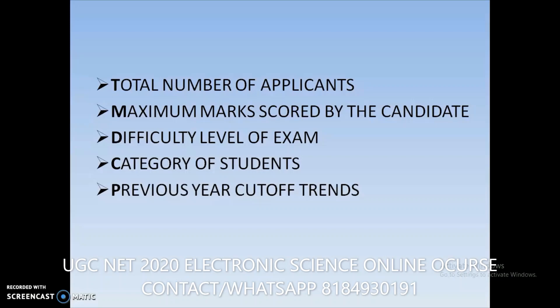The third factor is the difficulty level of the exam. Previously, the UJ Senate exam was conducted in one slot, but due to the large number of applicants and the shift to online mode, it is now conducted in different slots and dates. The morning slot may be easier while the afternoon slot may be moderate or difficult. Depending on the difficulty of your allotted slot, your cutoff marks will be adjusted accordingly.